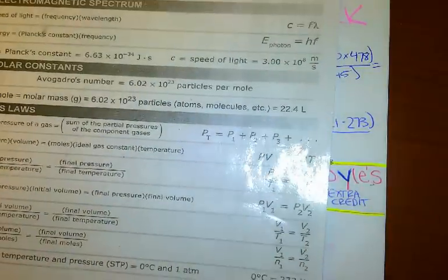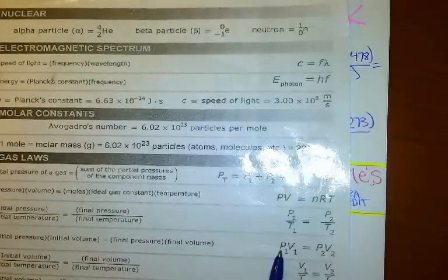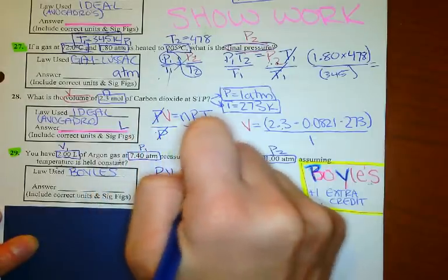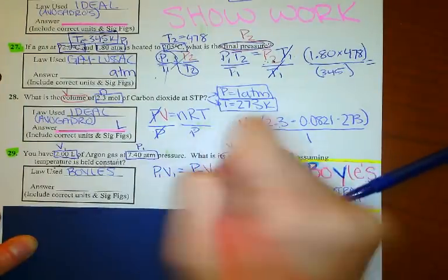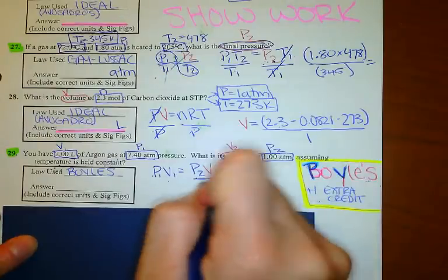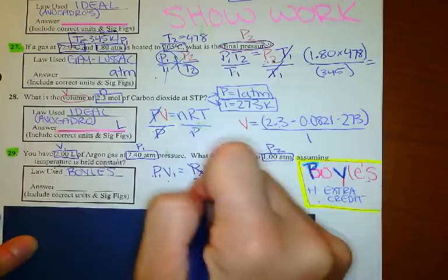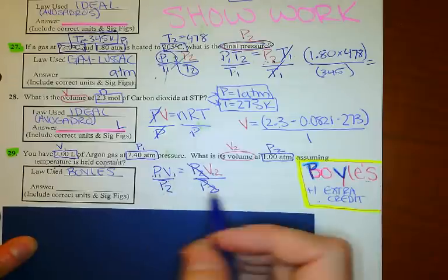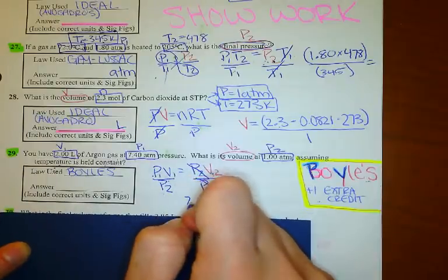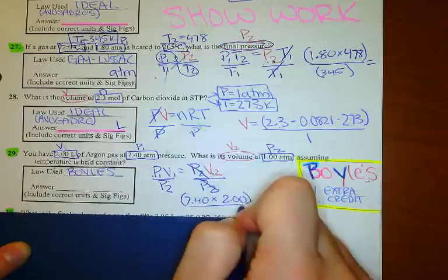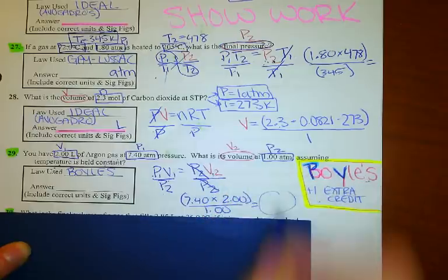We come back to the periodic table to find the Boyle's Law equation — it has two P's and two V's: P1V1 = P2V2. I write that down. This says first pressure times first volume equals second pressure times my answer. I don't want my answer times something, so I divide by P2. Now it says V2 = P1V1 ÷ P2. Plugging in: 7.40 atmospheres times 2.00, divided by 1.00, equals the answer — three significant figures, in liters.